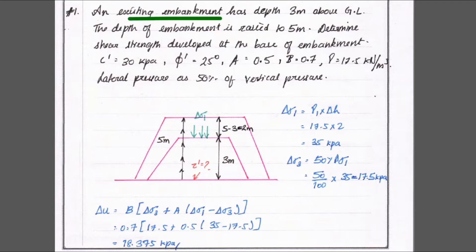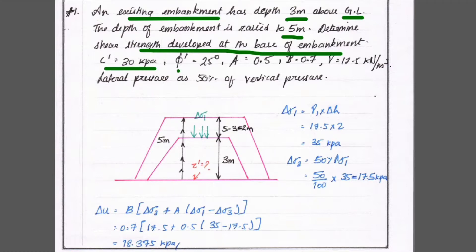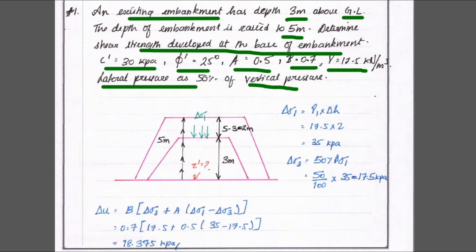The problem is: an existing embankment has a depth of 3 meters above the ground level, and the depth of the embankment is raised up to 5 meters. We need to determine the shear strength developed at the base of the embankment. The given values are: C' = 30 kPa, angle of internal friction φ = 25°, A = 0.5, B = 0.7, unit weight of soil γ = 17.5 kN/m³, and lateral earth pressure is 50% of vertical pressure.